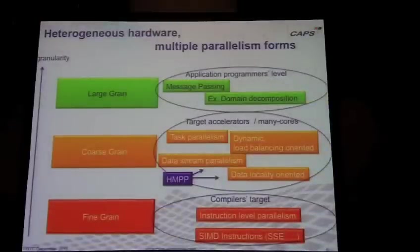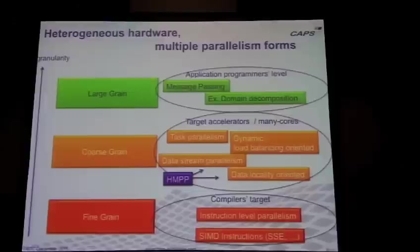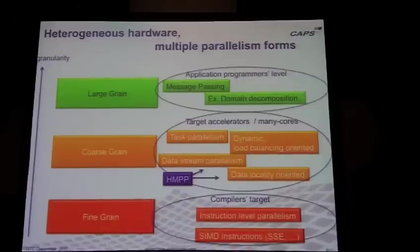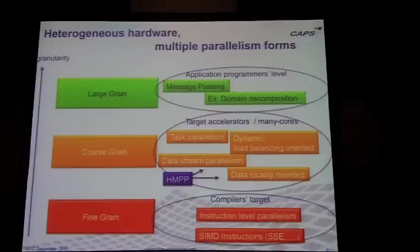If we look at the different levels of parallelism, at the highest level — coarse grain — you have message passing kind of parallelism. This is, for instance, what people do when they do domain decomposition: they slice the domain they are studying into parts, and each part is computed by a node in a cluster. Between nodes, there is message passing to exchange data. This is typically what the programmer level has to care of, and this is not a tool issue — it's really an algorithm programming problem.